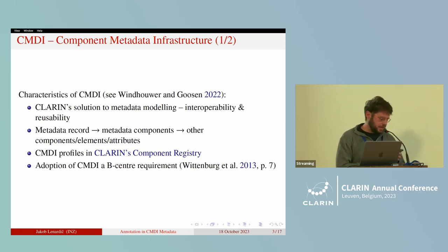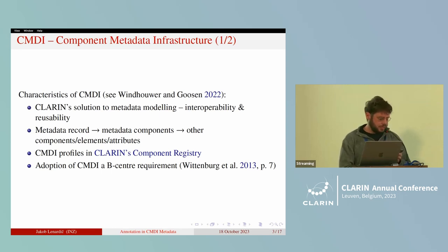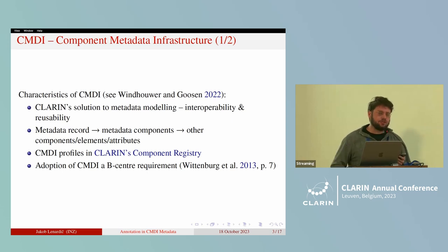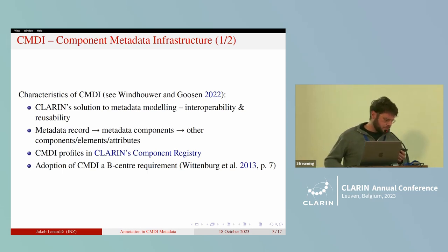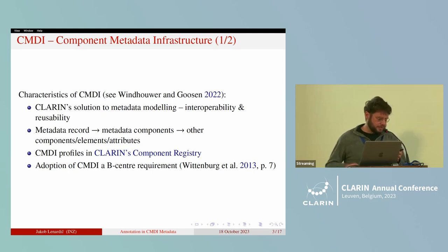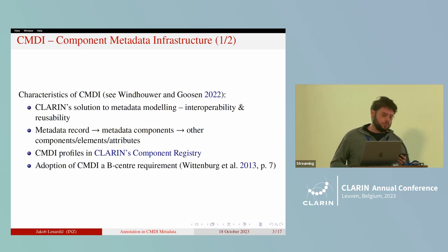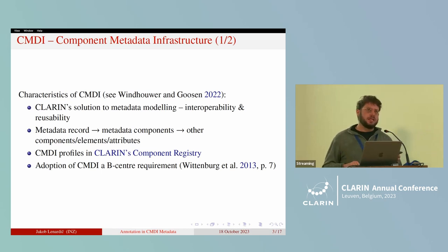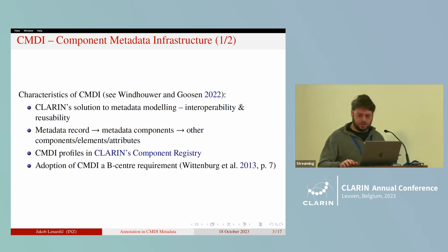Two of CMDI's main advantages are interoperability as well as reusability, both of which are crucial for the heterogeneous metadata landscape of a distributed infrastructure such as CLARIN. Structurally, a metadata record that uses CMDI is comprised of metadata components, which are in turn comprised of metadata elements, metadata attributes, or possibly other embedded components. The CMDI profiles which underlie the metadata records are stored in CLARIN's component registry.